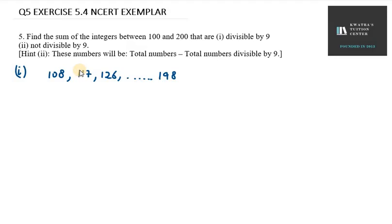So that will be the ending number for first part. So a is 108, first term is 108, d is 9, difference is 9, common difference, an is 198. Now as we have to find the sum, for sum we must have n number of terms.